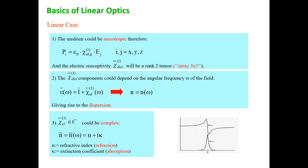We also said that this tensor might be complex — not just real. That means the refractive index in general can have an imaginary part, named the extinction coefficient, represented by the Greek letter kappa. This imaginary part comes from the fact that the system can absorb light. Today we give a short description of effect number one and start describing where effects number two and three come from.